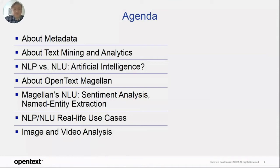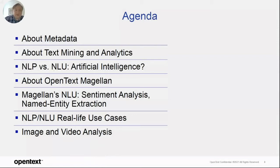Then I'm going to focus a little bit about NLP and NLU — what are the boundaries between those two? For some of you it might be obvious, but it's not that obvious if you take a closer look. Then why it is considered as artificial intelligence. Then I would switch to OpenText Magellan, which is our platform that allows us to access content and perform different types of analytics, including text mining and text analytics.